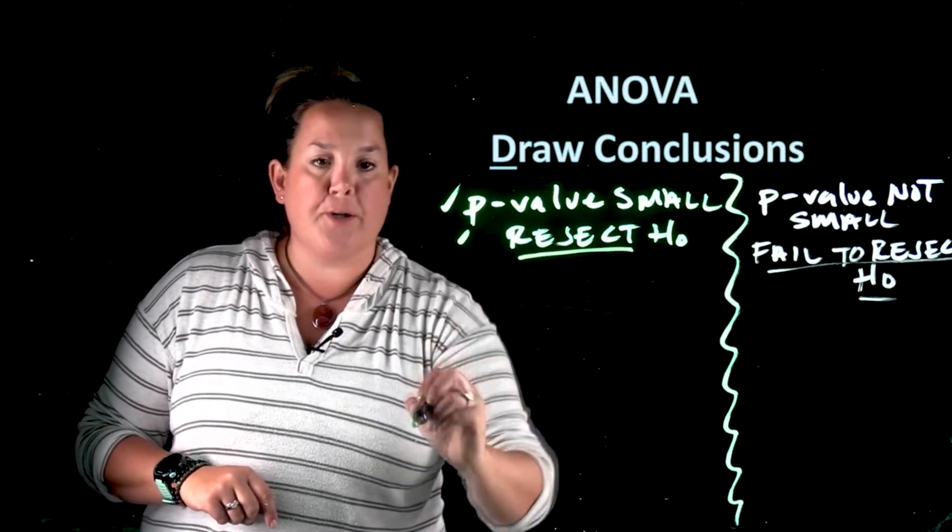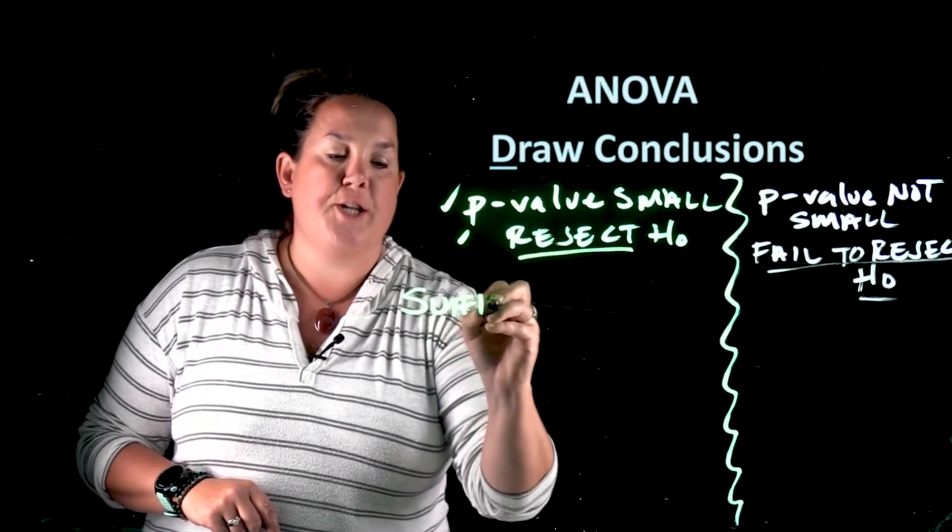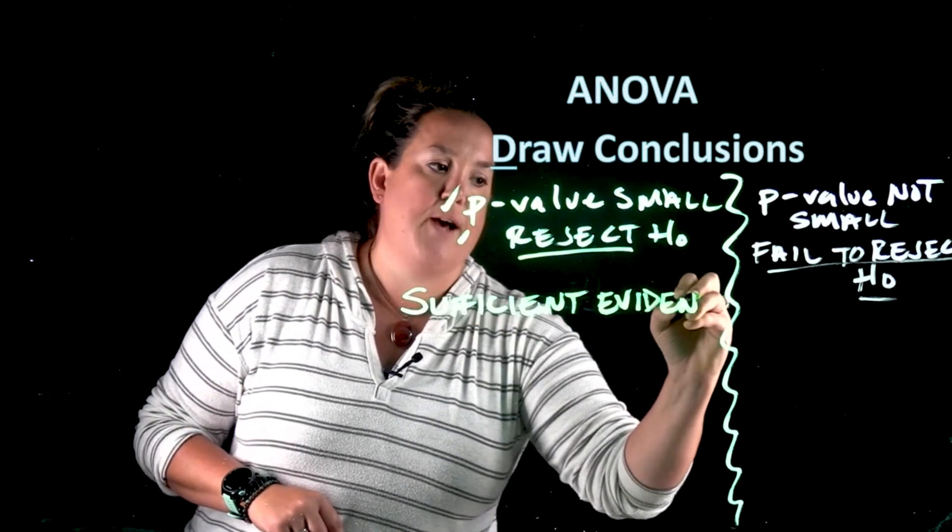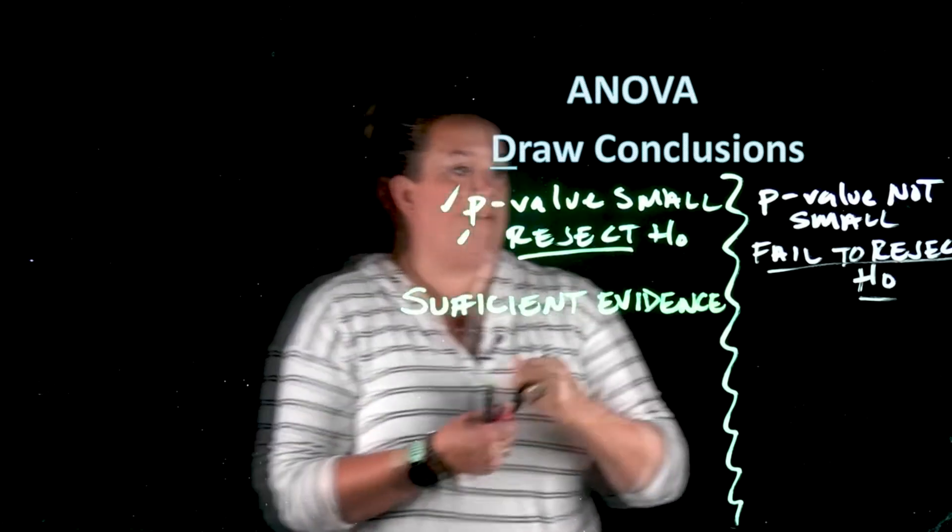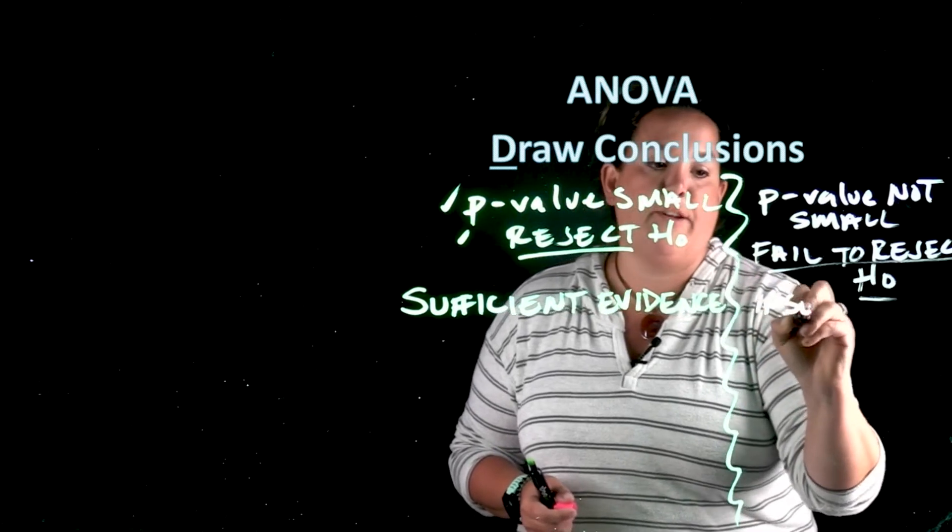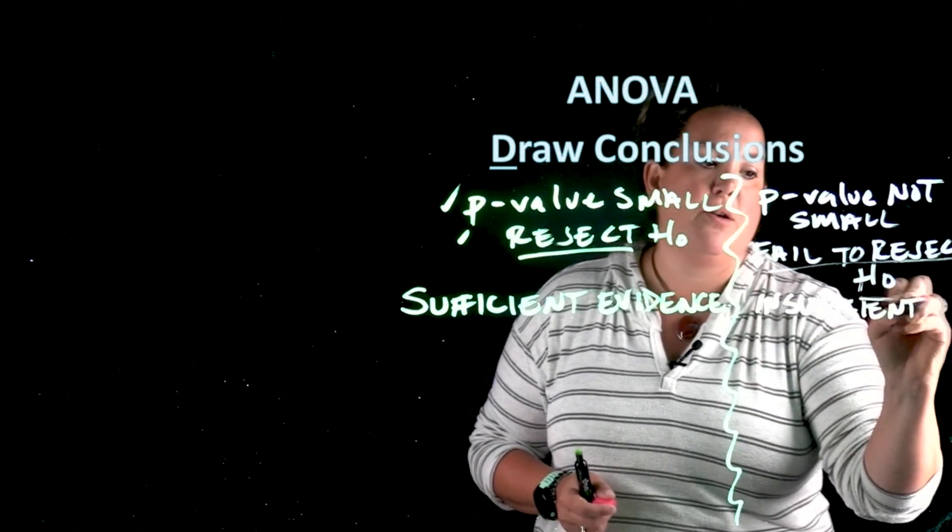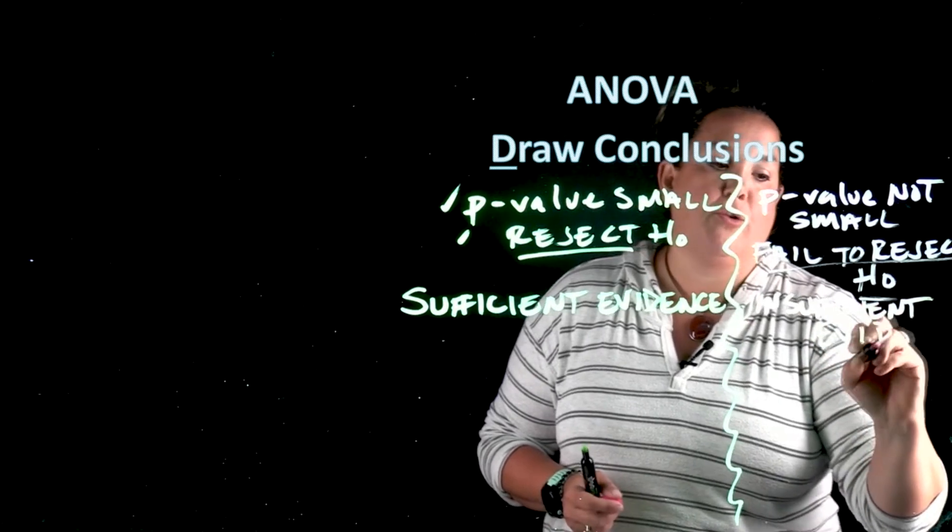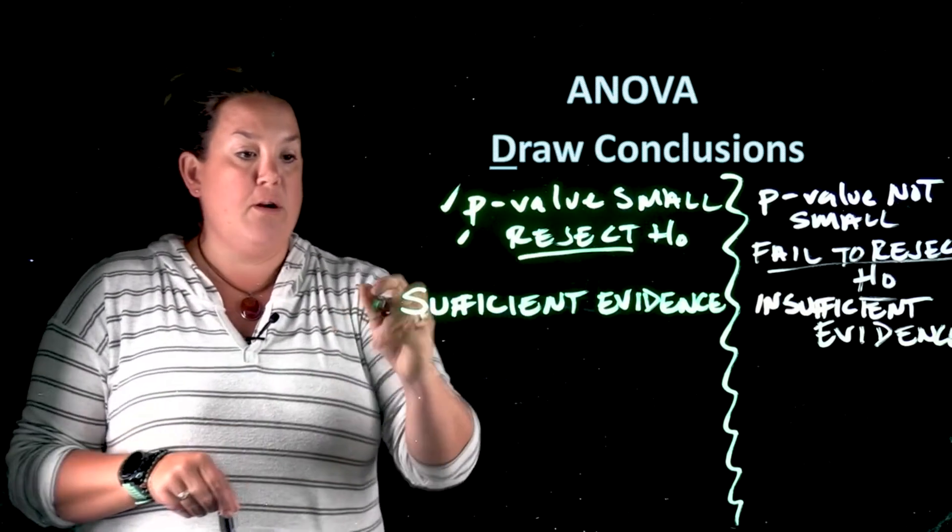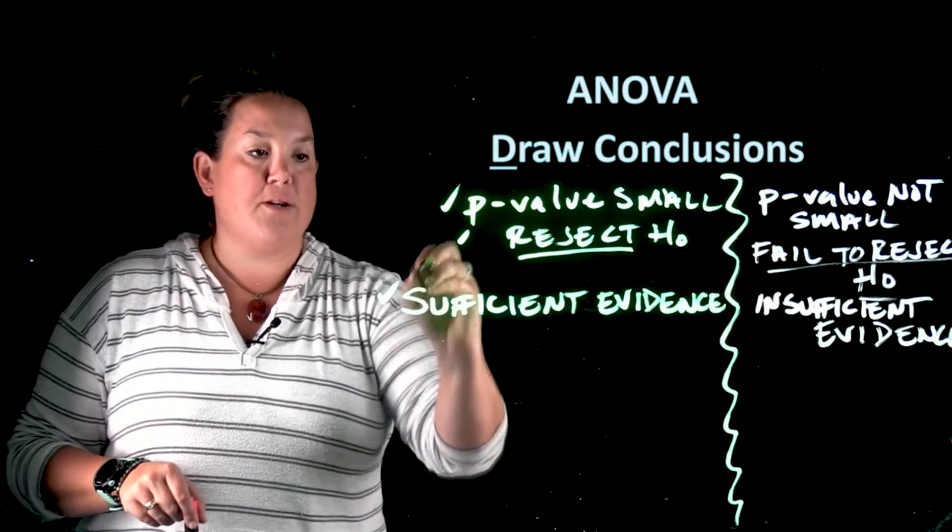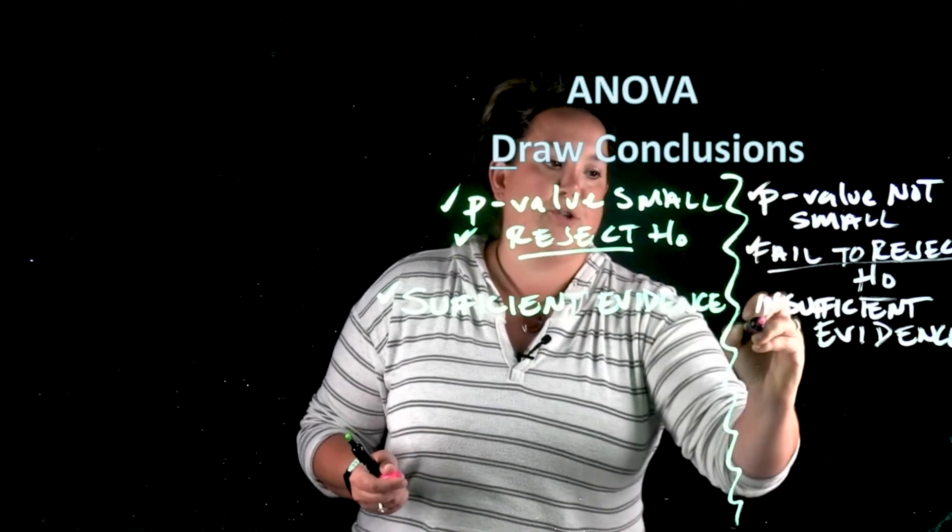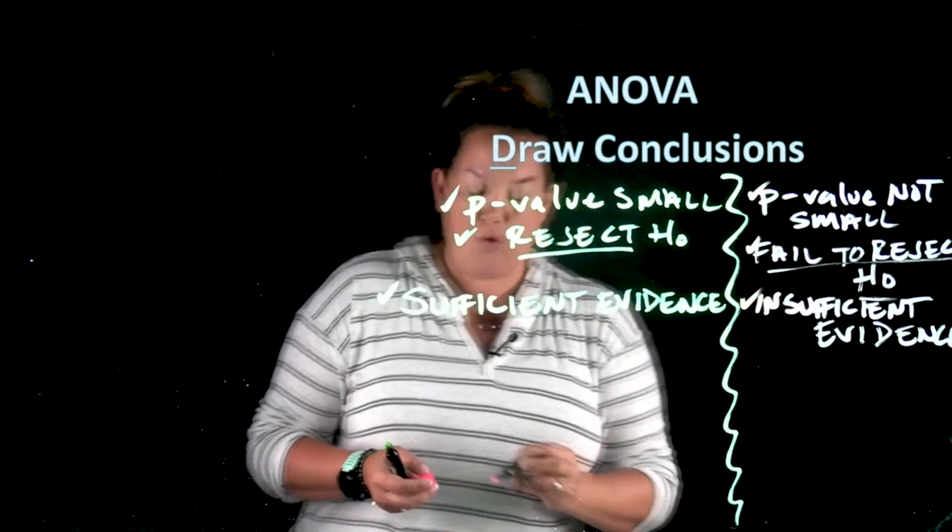When you reject the null, remember you always say that you have sufficient evidence, or you could say there's statistically significant evidence. And remember that when you fail to reject, so you're not leaving the null, you would say there is insufficient evidence, or you also could say you do not have statistically significant evidence. So these go together. If you have a small p-value you reject the null and you have sufficient evidence. If you have a p-value that is not small you fail to reject, which requires you to say you have insufficient evidence.